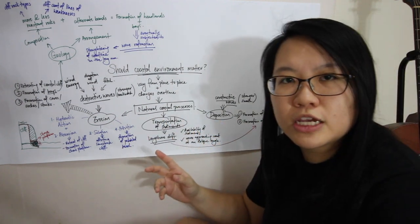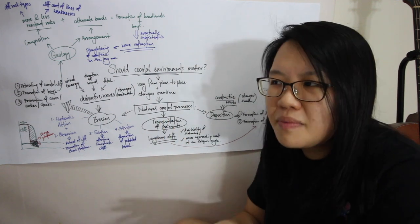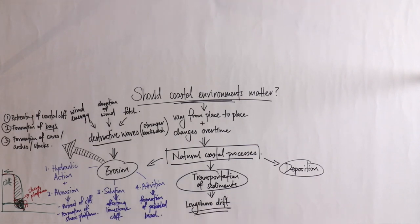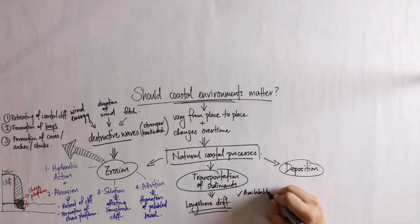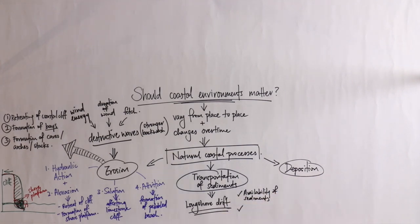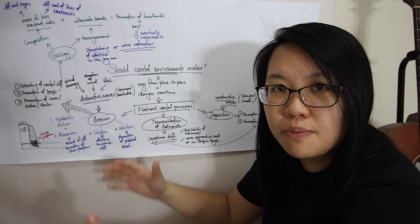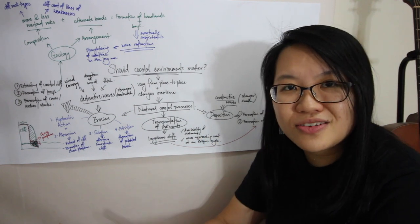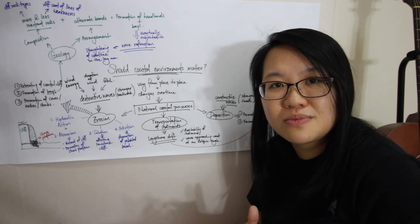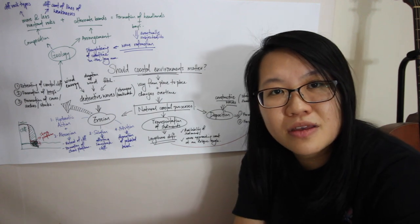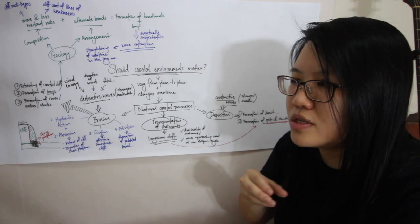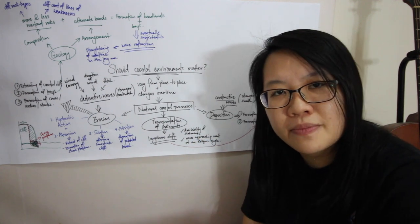Next, under the natural coastal processes, we have the transportation of sediments. The main thing is how sediments actually move along a beach — the process is longshore drift. There are two main criteria for longshore drift to occur: first, you need availability of sediments; if no sediments are available at that site, longshore drift will not occur. Second, the waves must approach the coast at an oblique angle, driven by prevailing winds also approaching at an oblique angle, so that sediments can move in a zigzag manner. If waves approach parallel to the coast, sediments just move up and down with no longshore drift.